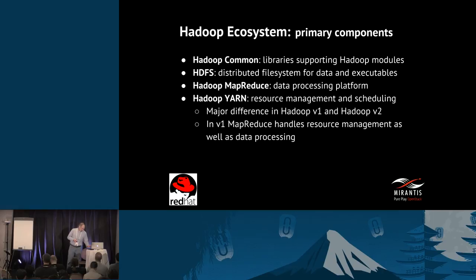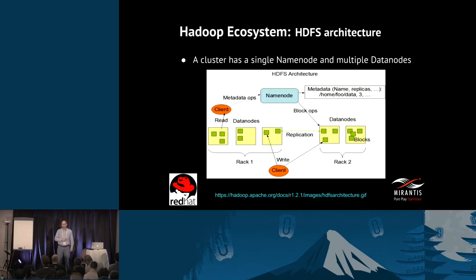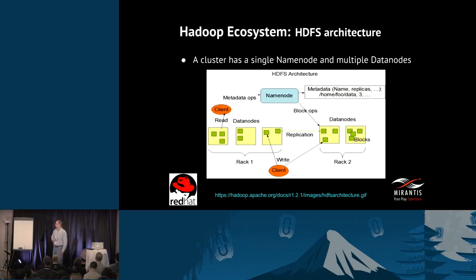Here's a high-level view of HDFS. You have a name node that tracks where your data is. Your data exists on data nodes and is replicated across multiple data nodes for high availability. When a client wants to interact with HDFS data, it asks the name node where its data is. The name node responds, telling the client which data nodes hold the data, and then the client goes out and reads and writes directly to the data nodes.